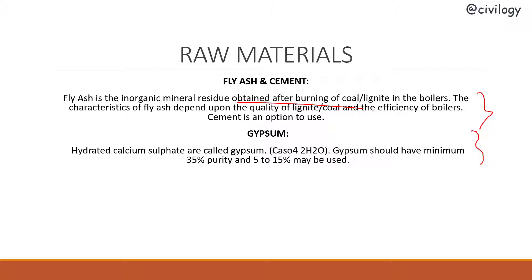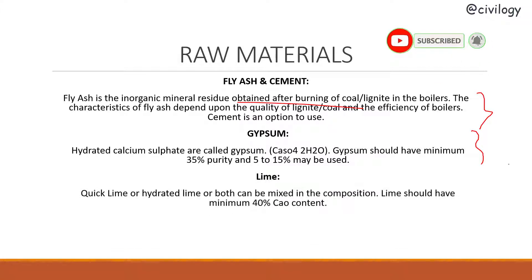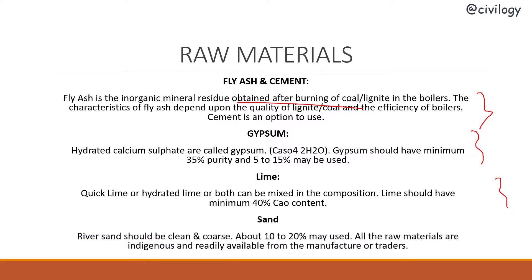Gypsum, or hydrated calcium sulfate, should have a minimum 35% purity, and 5 to 15 percent may be used in manufacturing. Lime — quick lime or hydrated lime or both — can be mixed in the composition; lime should have a minimum 40% CaO content. River sand should be clean and coarse, and about 10 to 20 percent may be used. These raw materials are indigenous and readily available from manufacturers or traders.